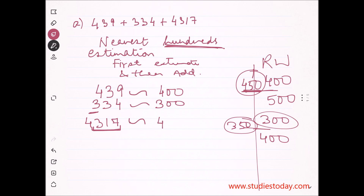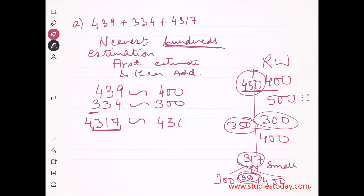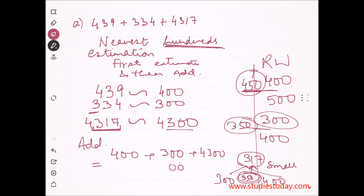Now 4317 — since I have to do the nearest 100 round-off, I decide from 350: 317 is smaller than 350, so 4317 rounds off to 4300. Now I perform the addition: 400 + 300 + 4300. Adding the hundreds places: 4 + 3 + 3 = 10, carry 1, so the answer is 5000. This is our answer for nearest 100.